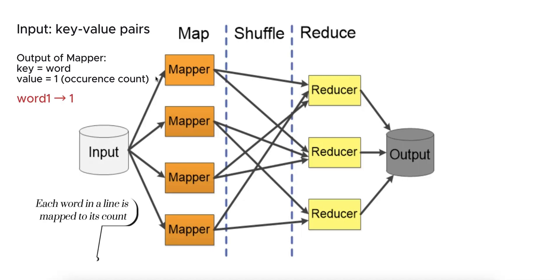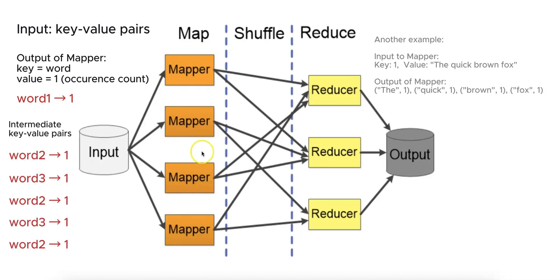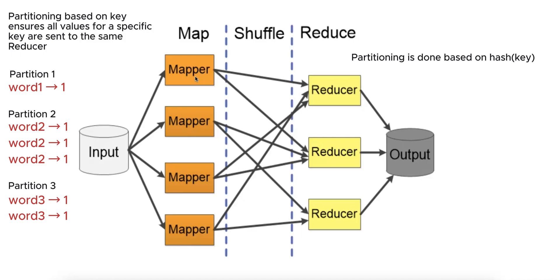The output from this step is a collection of intermediate key-value pairs. These key-value pairs are then locally written on the node running the mapper until all input chunks have been processed. This is intermediate storage. After this, the intermediate results are partitioned based on the key, preparing them for the next phase.